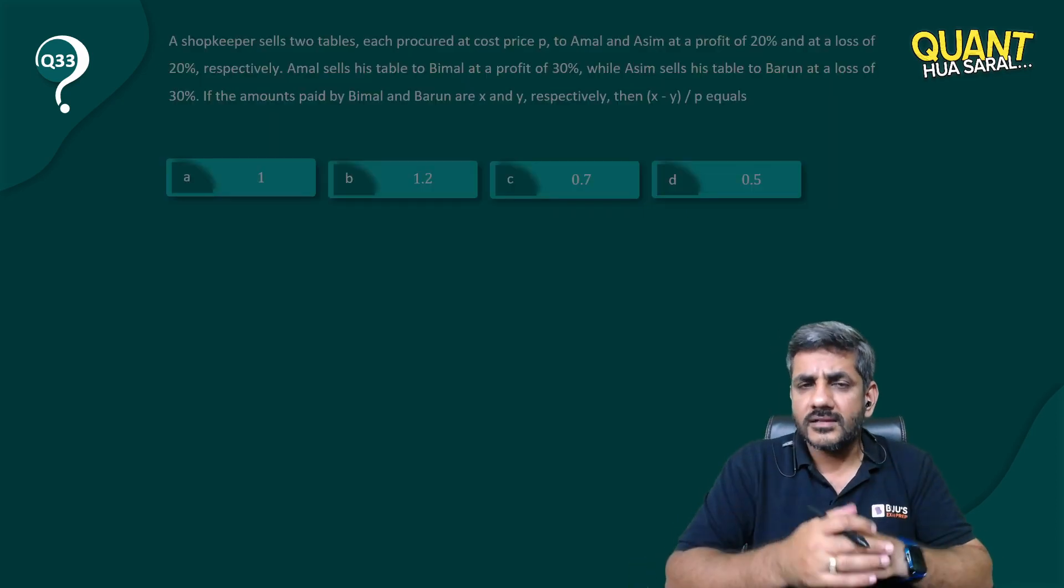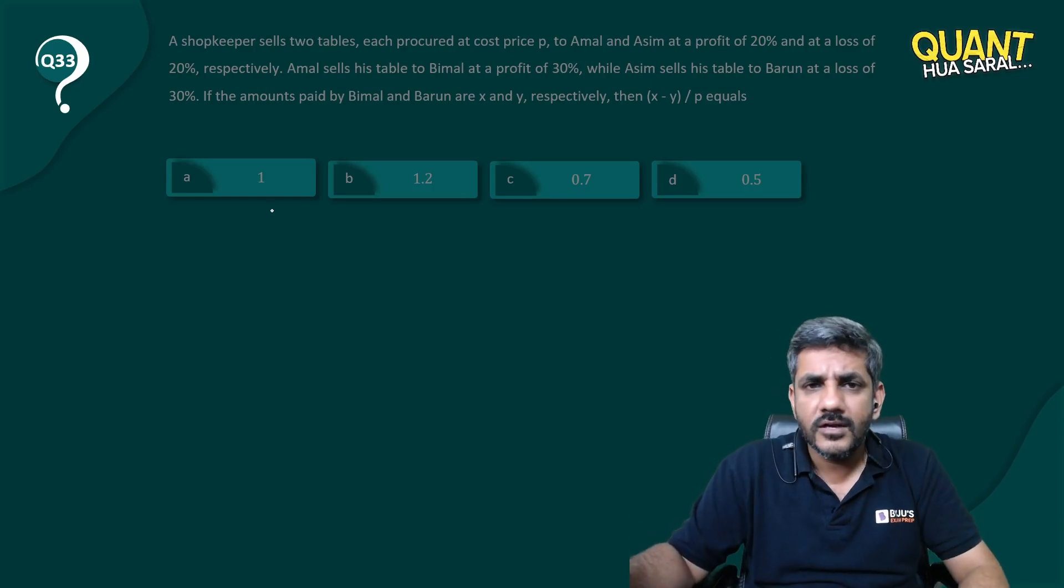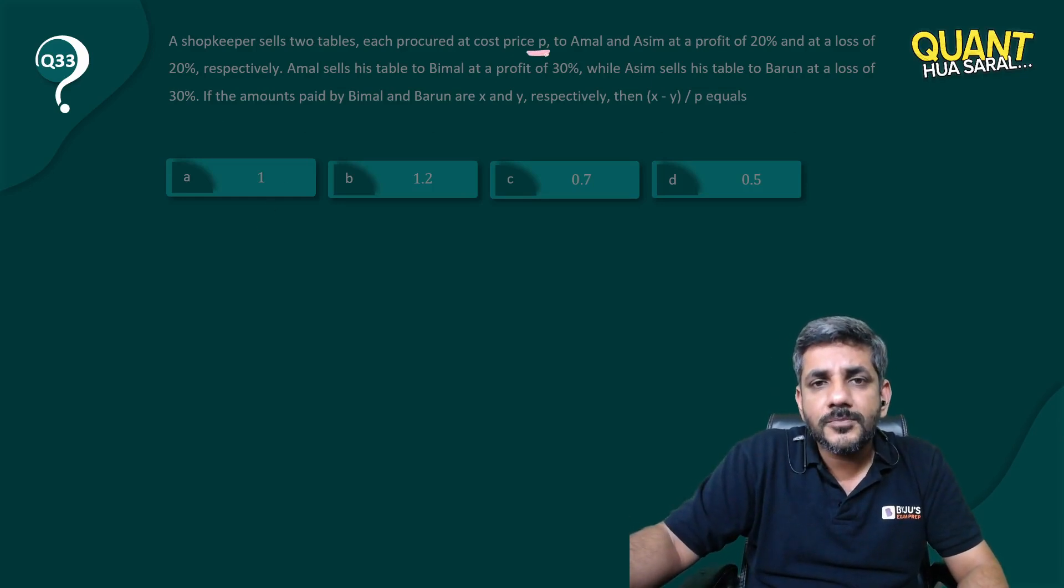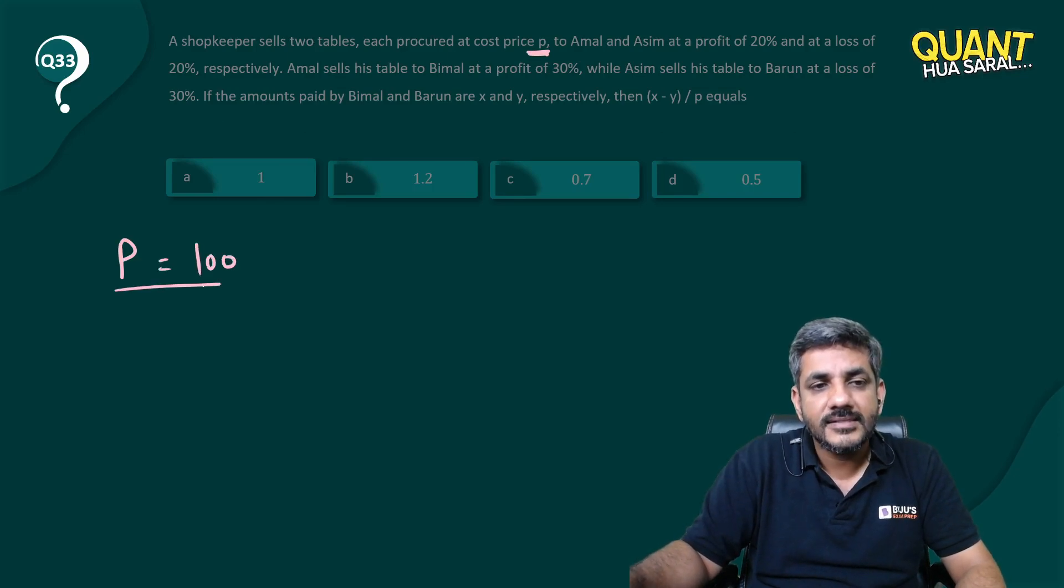Are there any absolute values? There are no absolute values. So he procured the tables at a cost price of P. Let us say P equals 100. He sold it to Amal